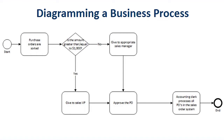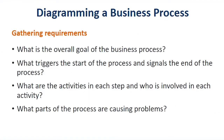Here on the slide, we see an outline of a sample order submission process that starts off by purchase orders being sorted. Then, depending on the amount of the purchase order, it either gets routed to a sales VP or to one of the sales managers for approval. And once approved, the accounting clerk processes the purchase orders. To get a thorough understanding of all the ins and outs of the process, perform an in-depth discovery on the process.